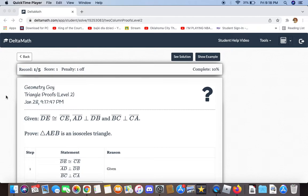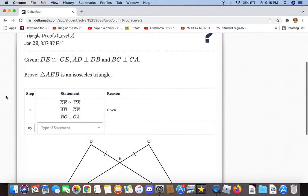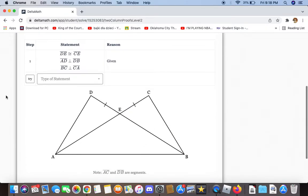Given that line segments DE and CE are congruent, AD and DB are perpendicular, and BC and CA are perpendicular, we need to prove that triangle AEB is isosceles.